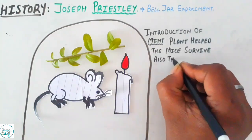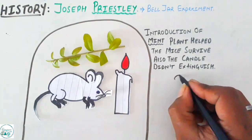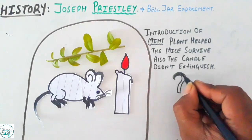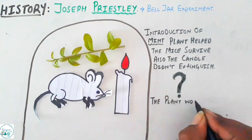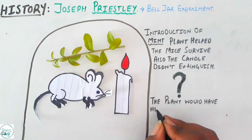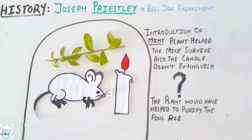Now he was compelled to conclude that the mint plant which was introduced would have purified the air which was earlier foul. This purified air was referred to as dephlogisticated air.